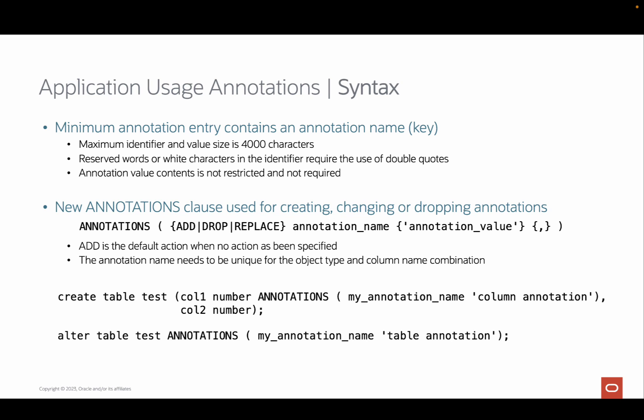Adding or altering annotations is done with the create or alter statements you already use for the object type. The annotation section is specified at the column level, or at the end of the statement if the annotation applies to the whole object. In the example at the bottom of the slide, you will first see an annotation on a column while creating a new table, and the second example shows adding an annotation at table level. Although annotation names must be unique, they only have to be unique for the combination of object name, object type, and column name, so the example will not result in an error even though the same annotation name is used twice.